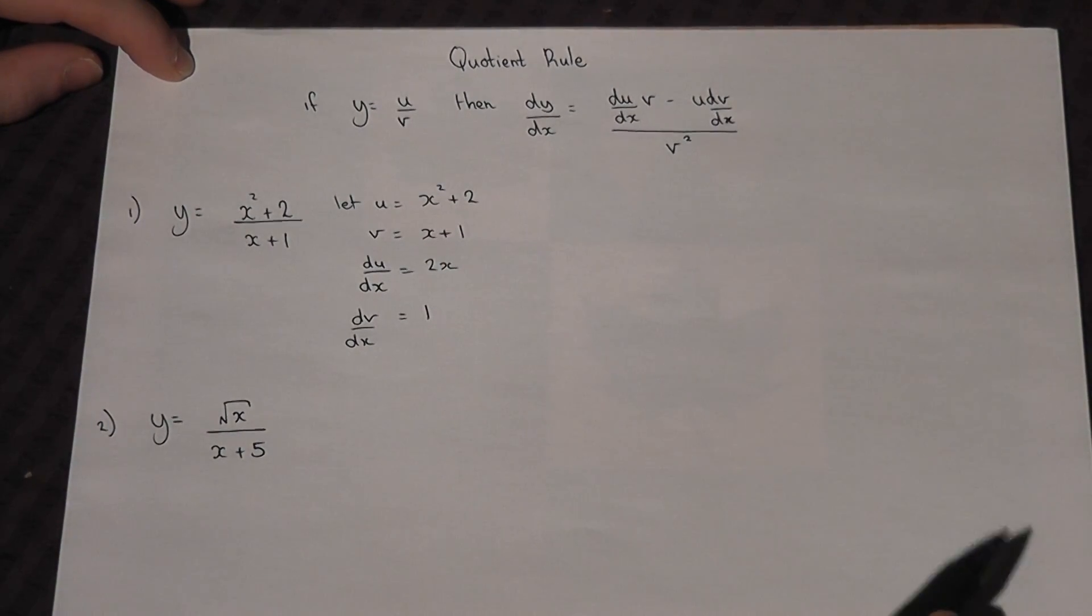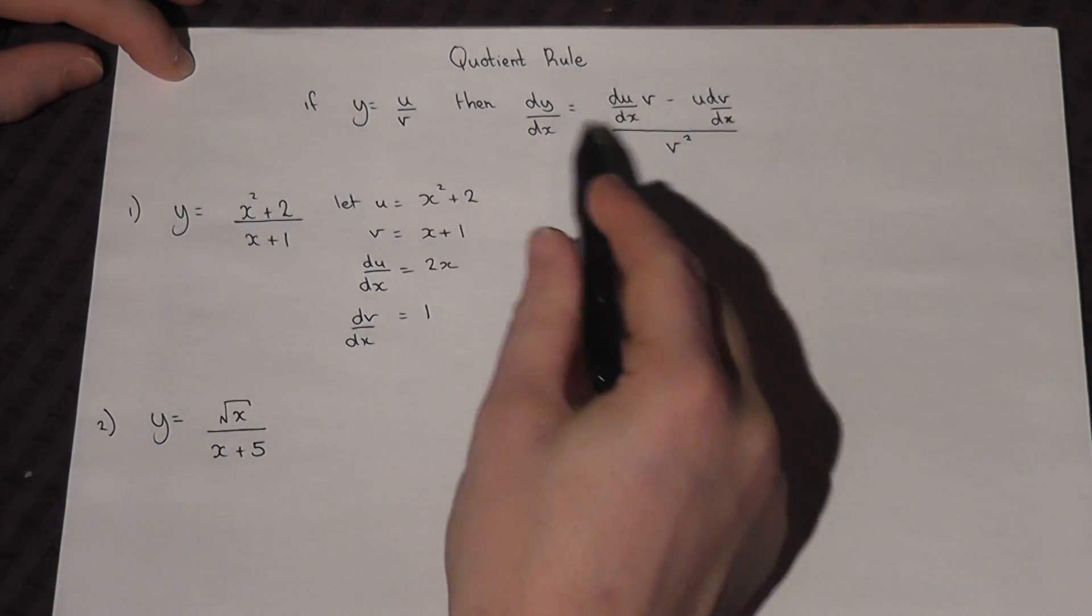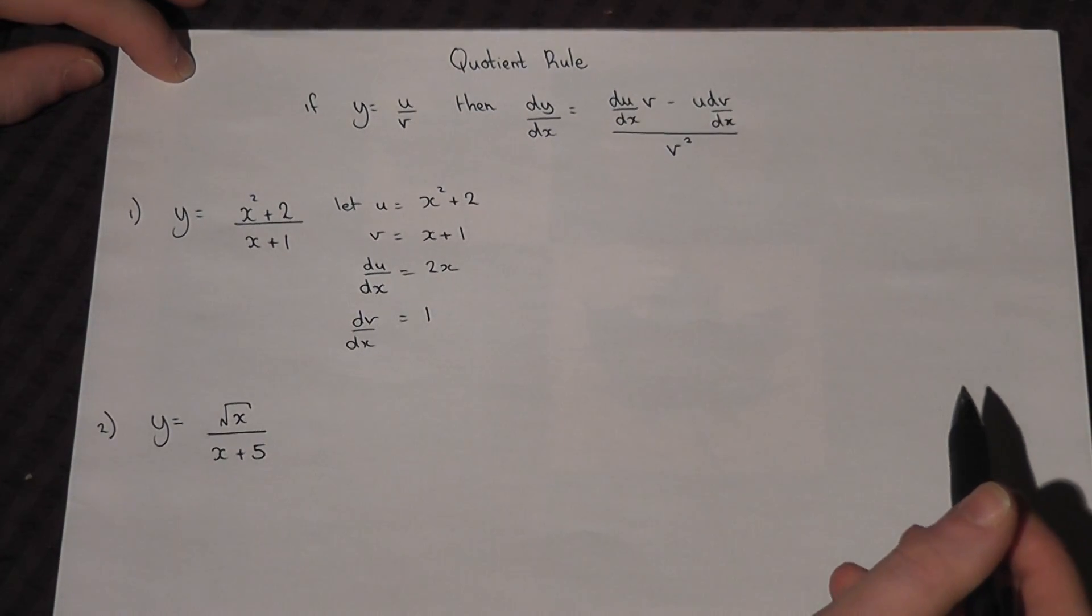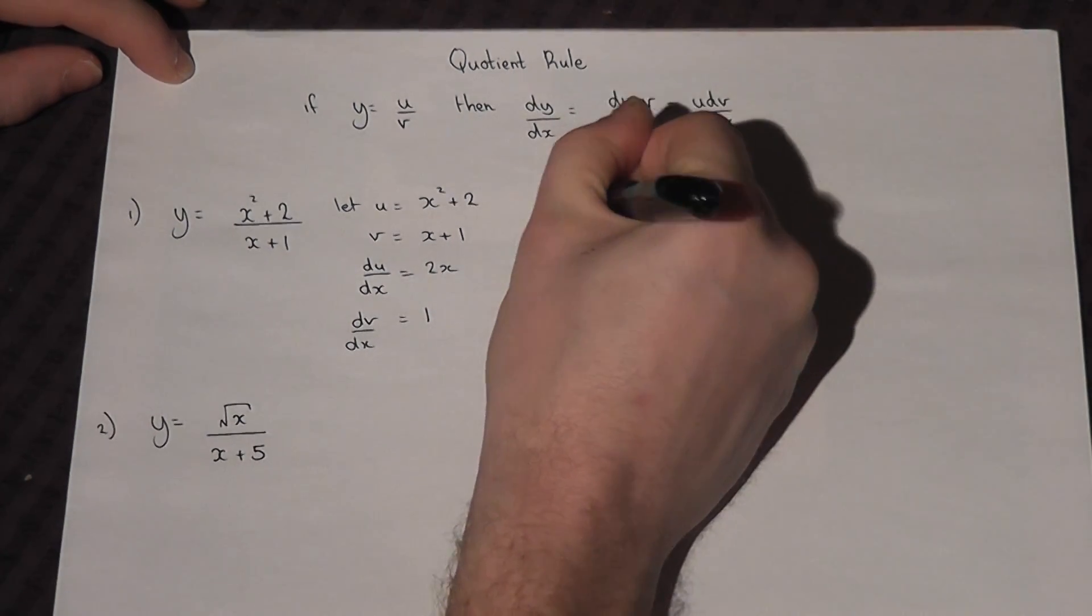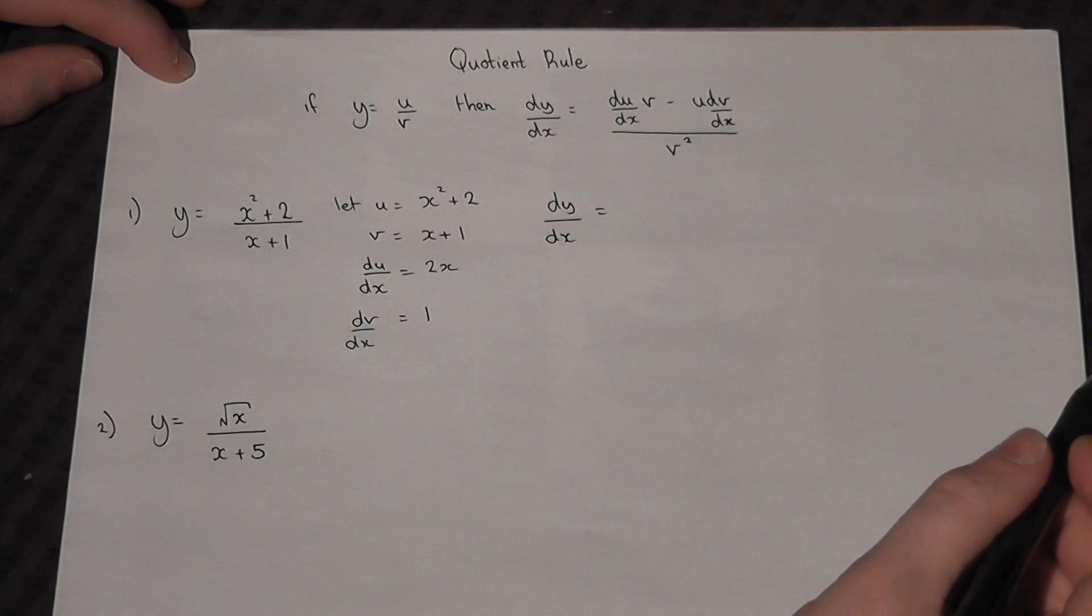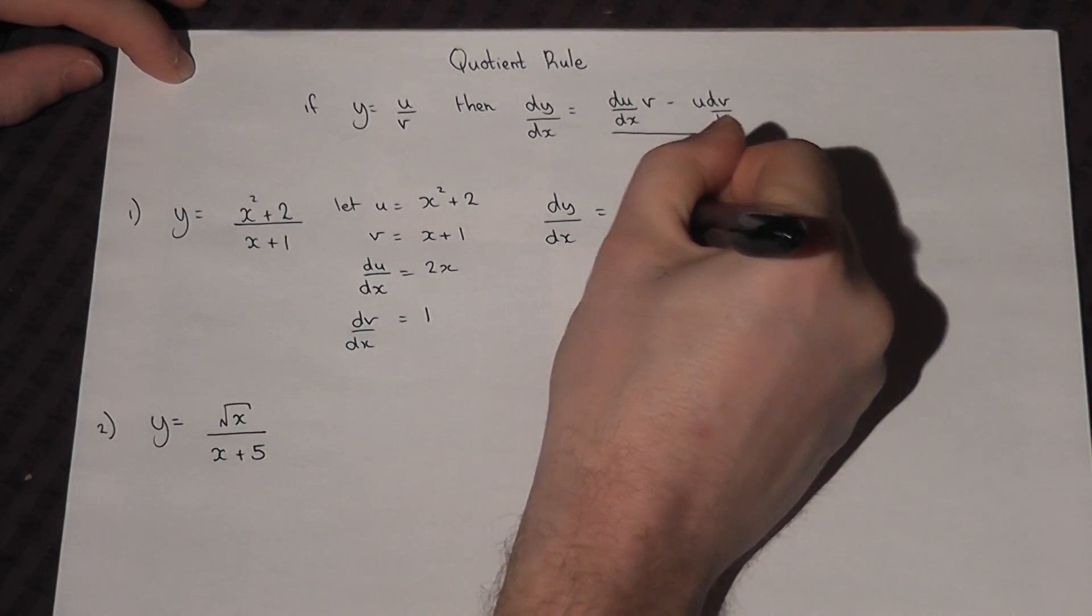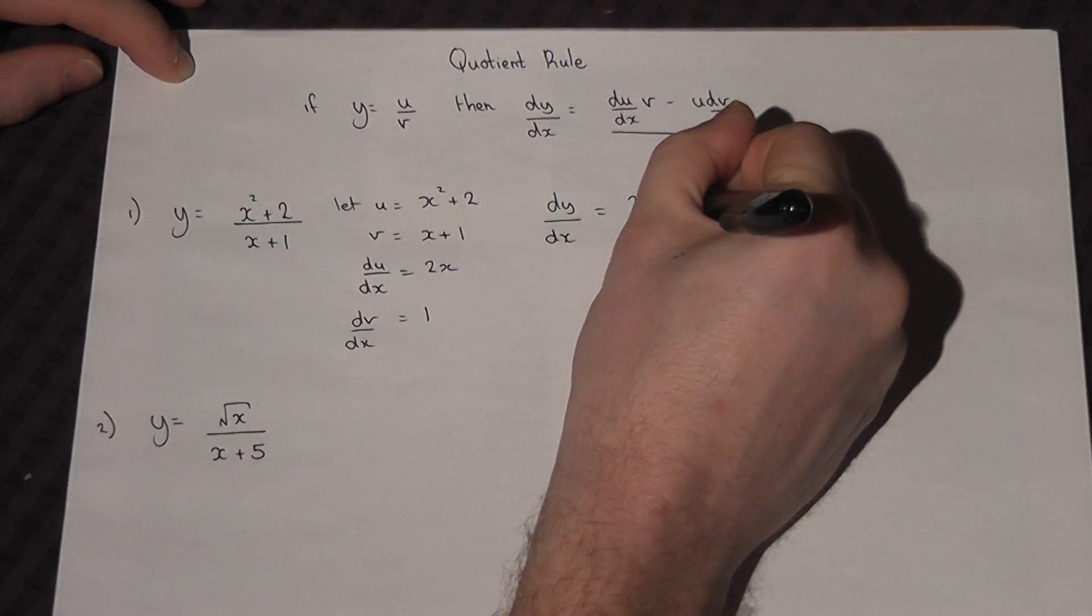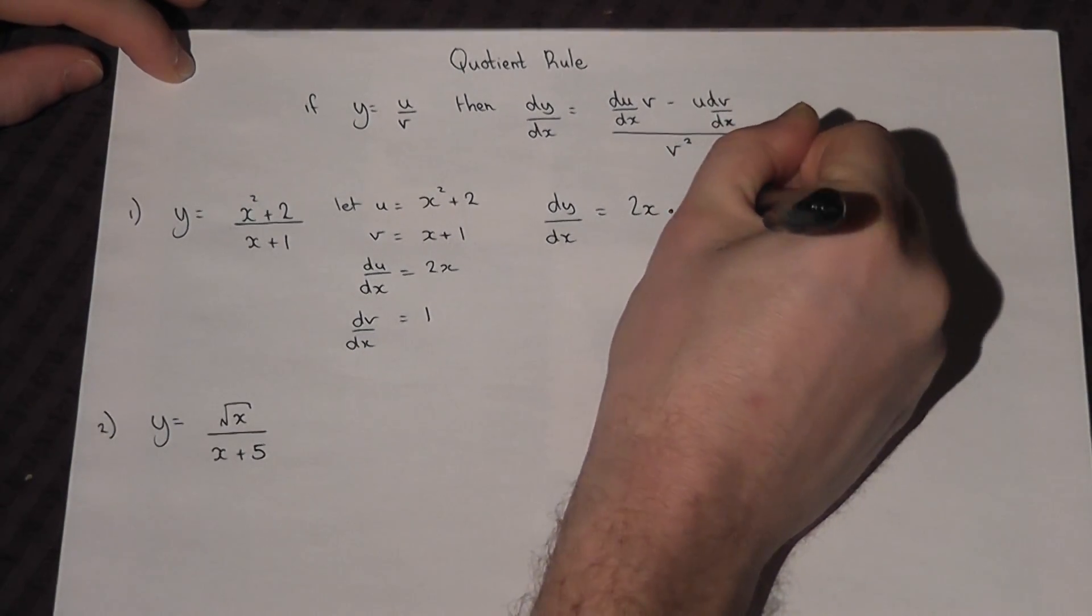We then have to place these parts into the Quotient Rule equation. So dy by dx will equal du by dx equals 2x, so it's 2x times by v, which was x plus 1.